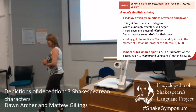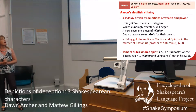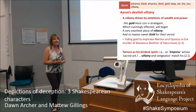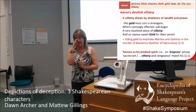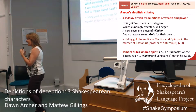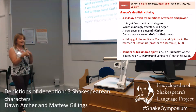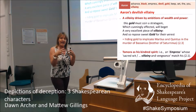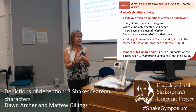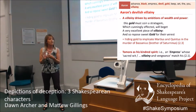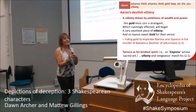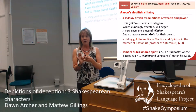If we do this for Aaron, the keywords we get are at the top — things like advanced, black, empress, devil, gold, keep, set, and villainy. I've given the title here: Aaron's devilish villainy. If you know the play Titus Andronicus, Aaron is a slave who works in tandem with the person he's having an illicit affair with, and together they get up to lots of villainy. He talks about his ambition relating to wealth and power: 'this gold must coin a stratagem,' and gold is one of the keywords. 'Which cunningly effected will beget a very excellent piece of villainy and so repost with gold for their unrest.'